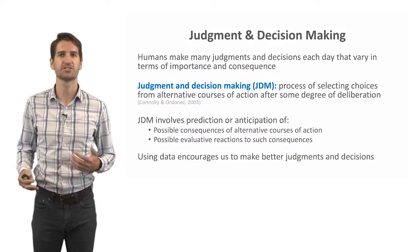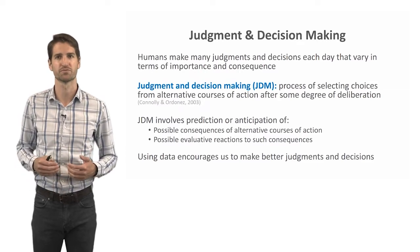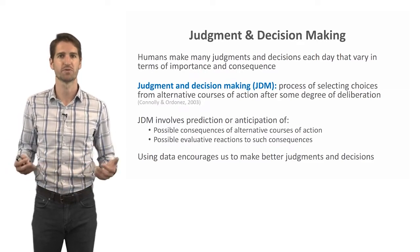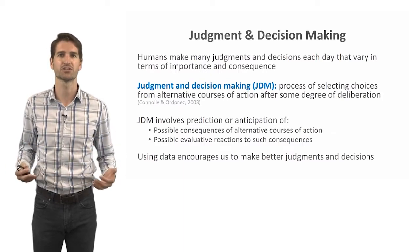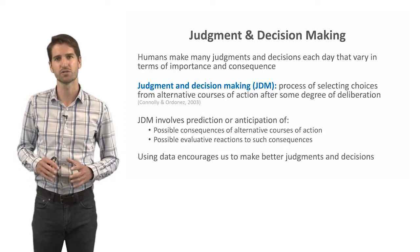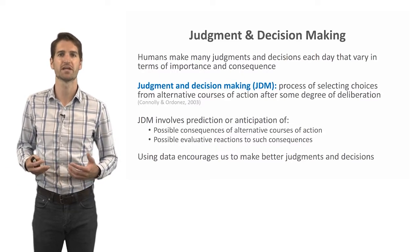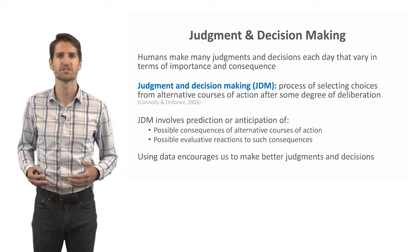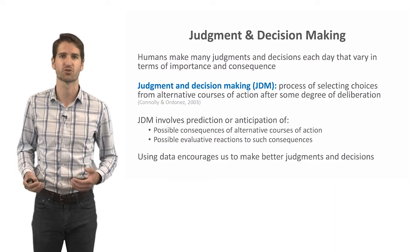Humans make many judgments and decisions each day that vary in terms of their importance and their consequence, both for the individual themselves as well as for other people. Judgment and decision making, or JDM for short, refers to a process of selecting choices from alternative courses of action after some degree of deliberation, either at the individual or group level. It involves prediction and anticipation of possible consequences of alternative courses of action, as well as possible evaluative reactions to such consequences.